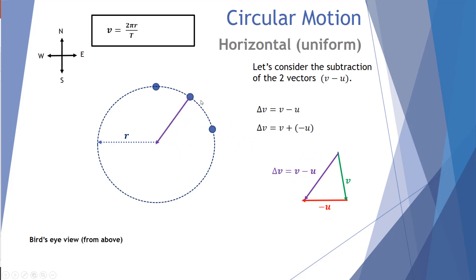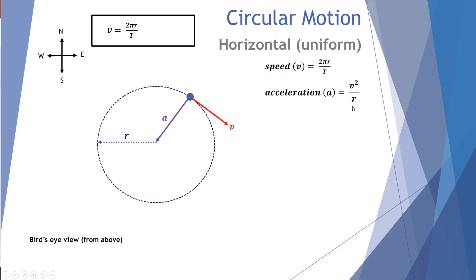This gives us an average from the two positions. When we transfer this across to the average location, you can see the change in velocity is towards the center of the circular path. Since we have a change in velocity over time, this object is accelerating despite having a constant speed. An object undergoing uniform horizontal circular motion is accelerating towards the center.